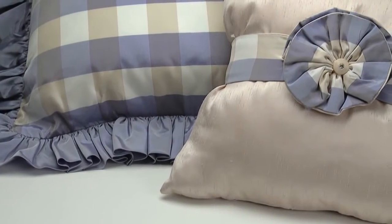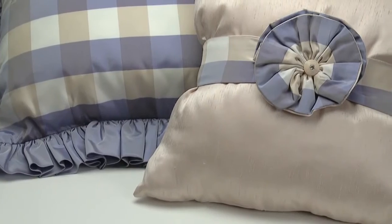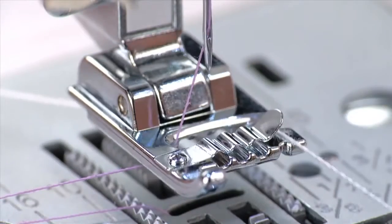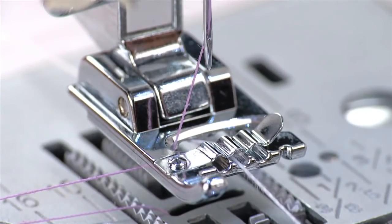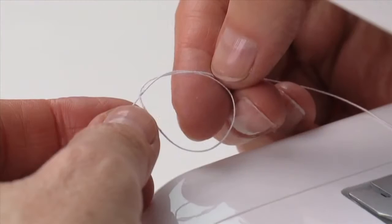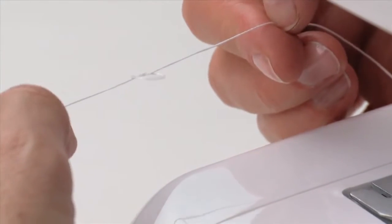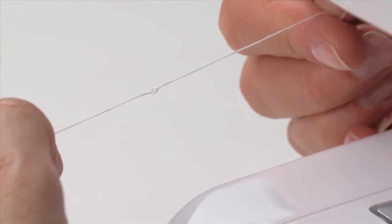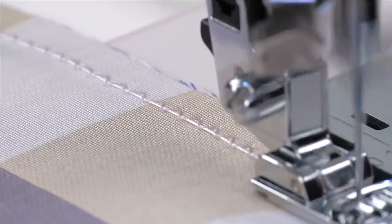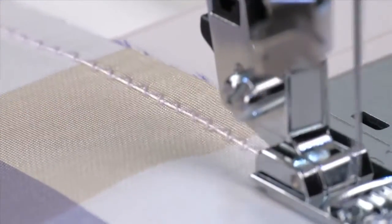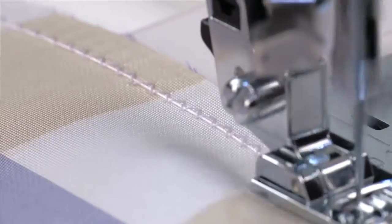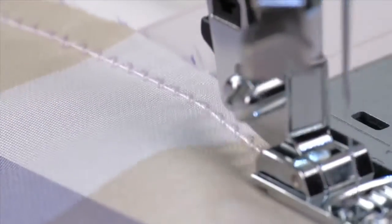The cording foot can also be used to gather fabrics. Place a single strand of heavyweight thread into the groove. Secure the cord by tying a knot in it behind the presser foot. Select a narrow zigzag stitch, then sew making sure it sews over the cord but doesn't sew into the cord.